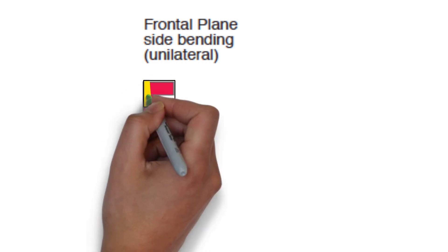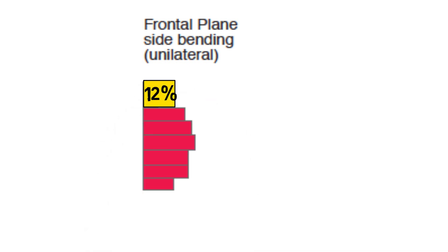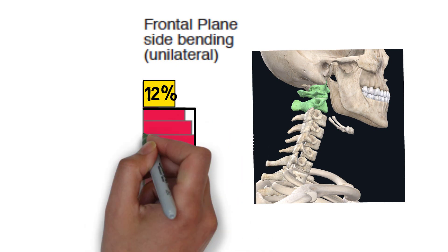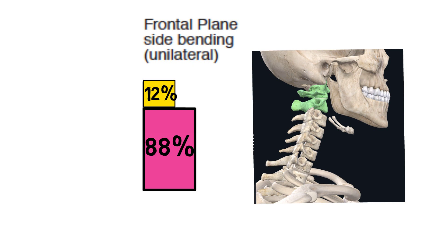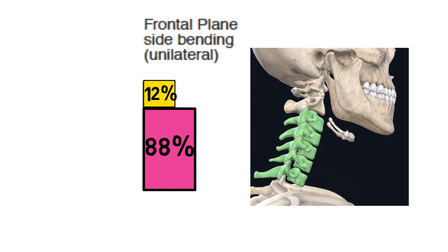And finally, side bending. Only about 5 degrees occur at the atlanto-occipital region, which accounts for about 12% contribution to the total side bending range of motion. Most of the movement actually occurs at C2-C7 regions with about 88% of the total contribution.